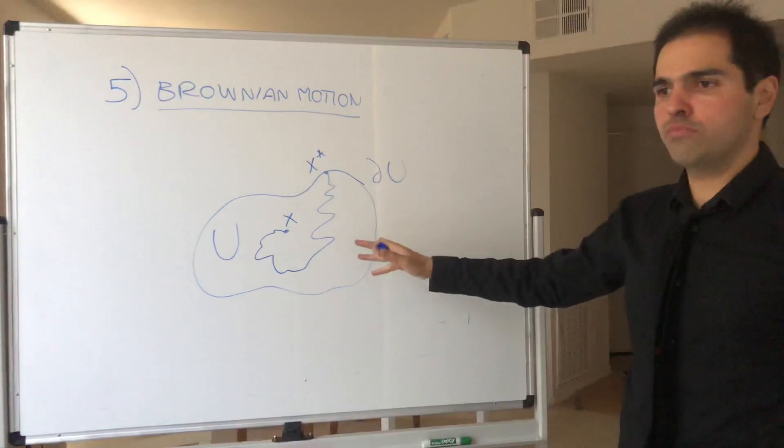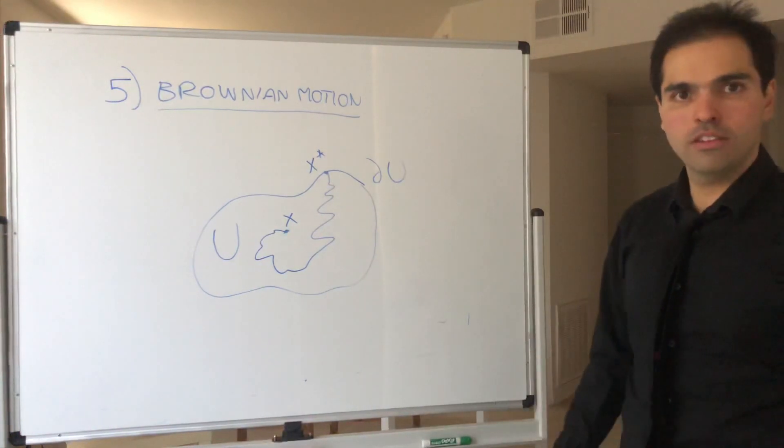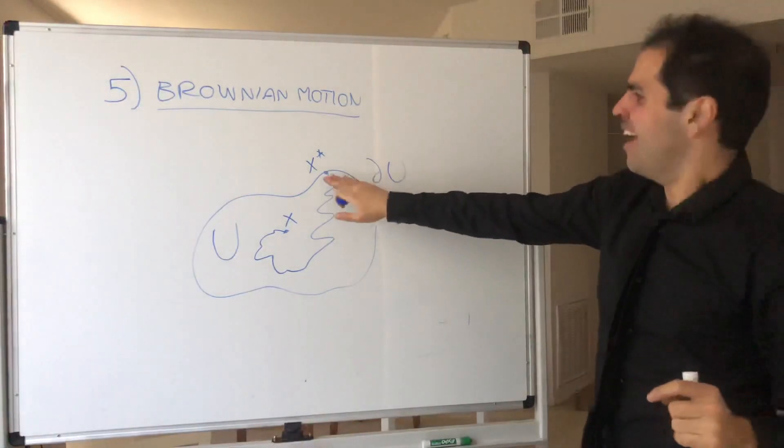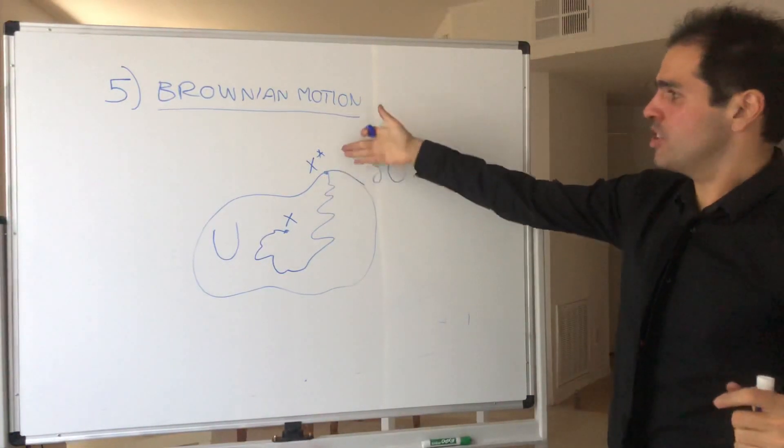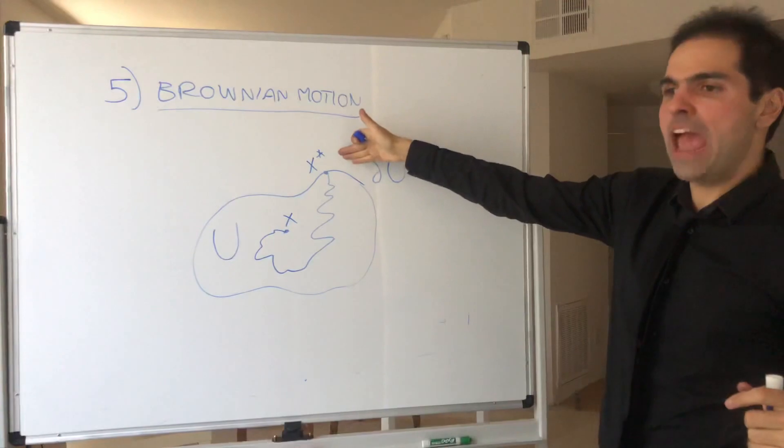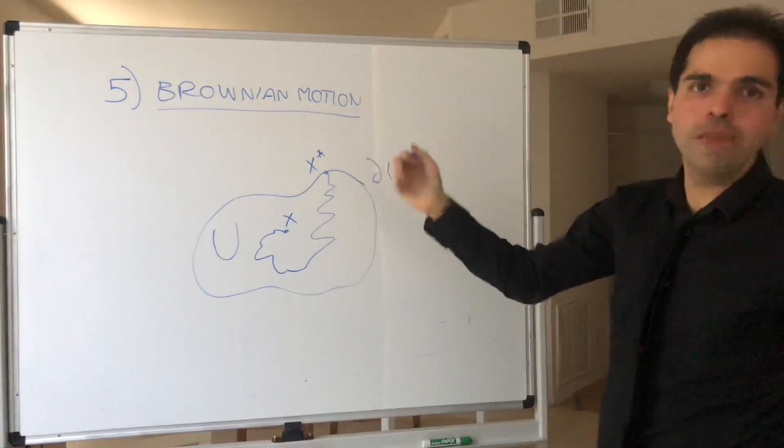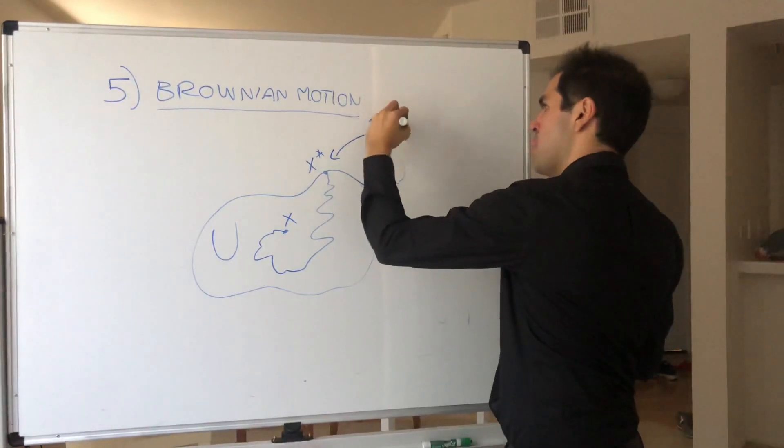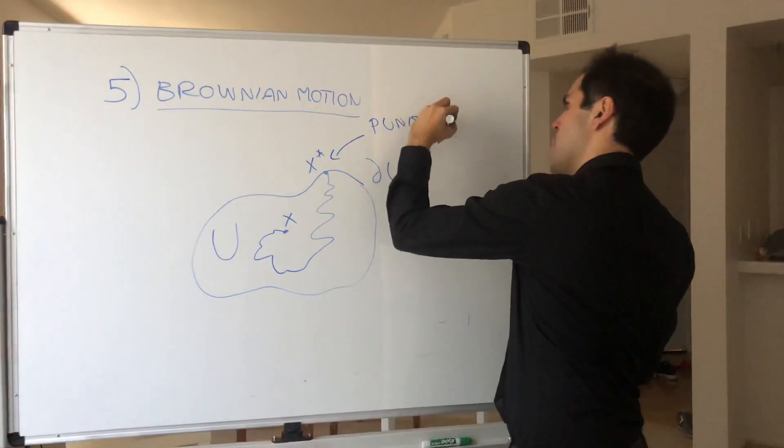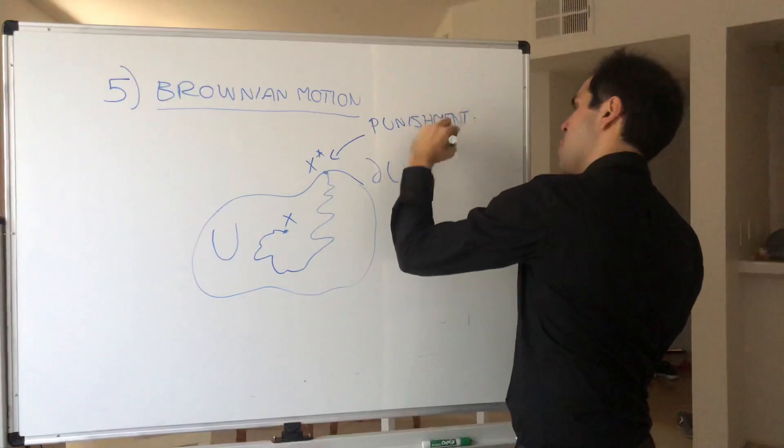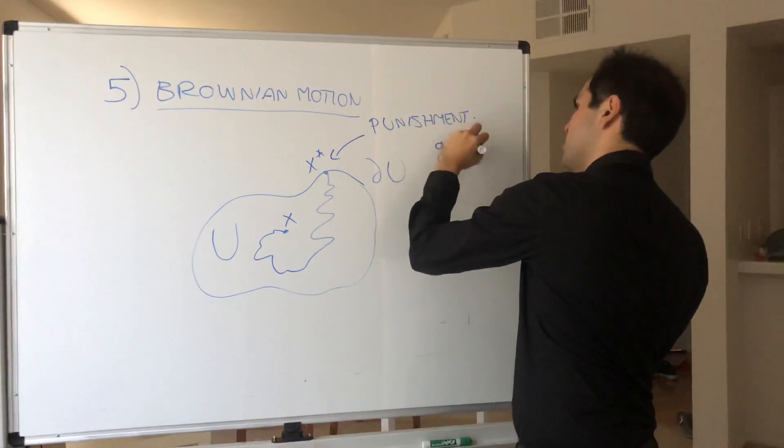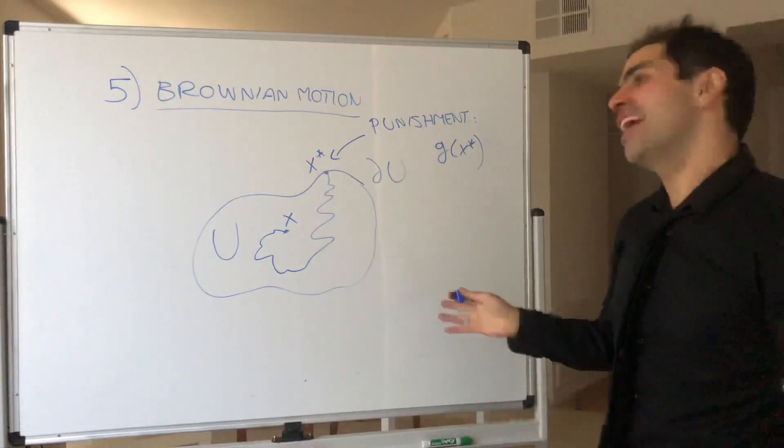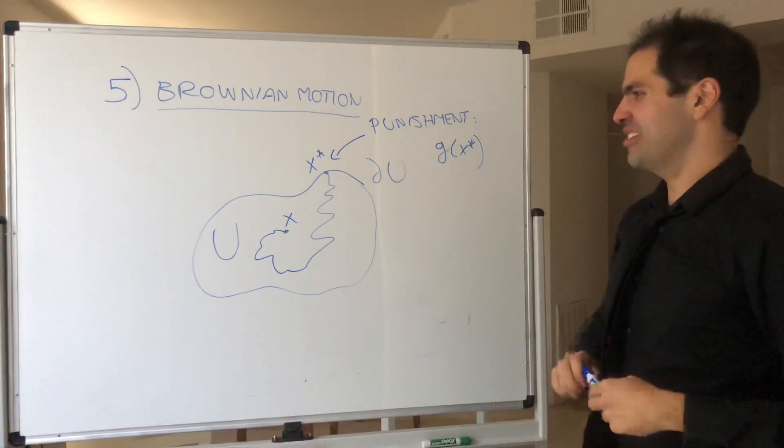And of course, once you hit the wall, you have some damage. I think maybe hitting the car in the wall - please don't do that. And you have some damage. And at this damage, you have to pay some punishment or maybe some reward. G of x star. The price you have to pay to your insurance or just how much your head hurts if you want, if you hit a tree or something.